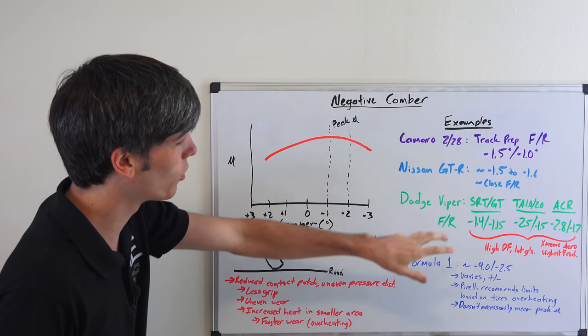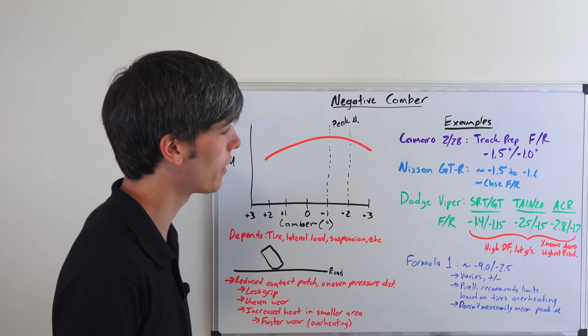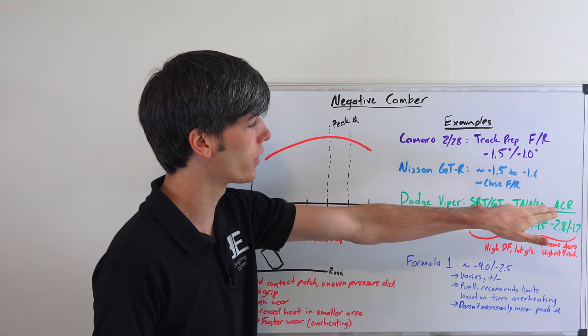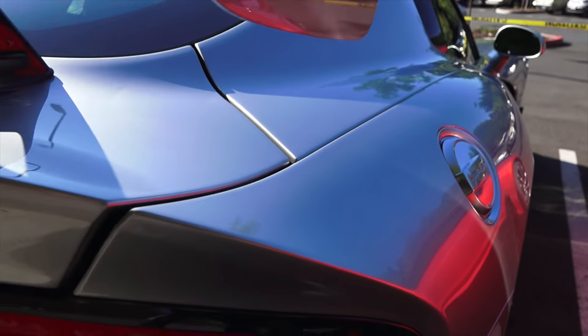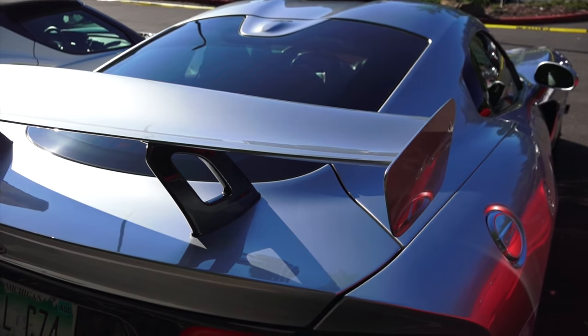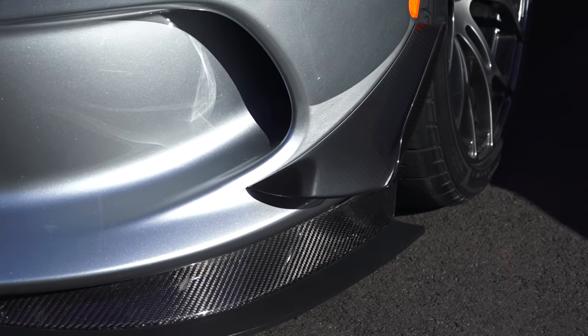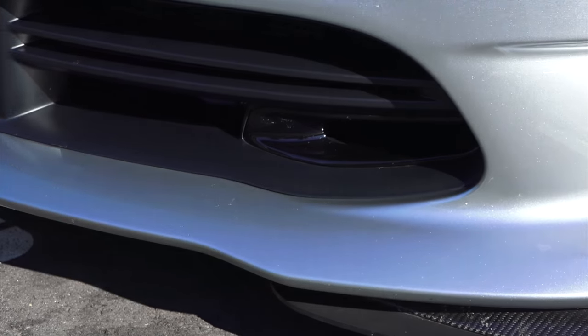And then the ACR, negative 2.8, an insanely high camber angle for a road car, and negative 1.7 in the rear. Looking at this, okay, what's different between these cars? Why do these have such higher camber angles? Well, the TA 1.0 and the TA 2.0, that adds a big rear wing to the back of the Viper. It adds a front splitter, you've got dive planes. And then if you go to the ACR, you're even getting more aggressive.